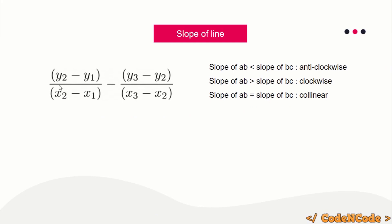The slope of AB is (y2 - y1) / (x2 - x1), where (x1, y1) are coordinates of A, (x2, y2) are coordinates of B, and (x3, y3) are coordinates of C. The slope of BC is (y3 - y2) / (x3 - x2). If slope of AB is smaller than slope of BC, the expression (slope_AB - slope_BC) is less than zero; if greater, the expression is greater than zero; and if they are equal, the expression equals zero.